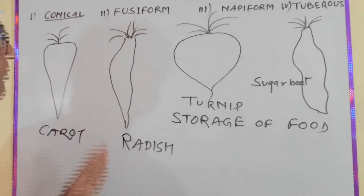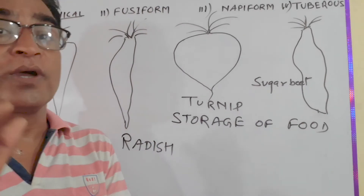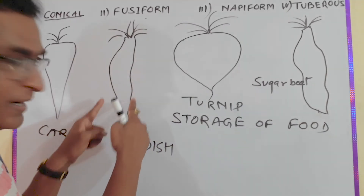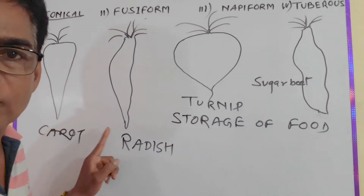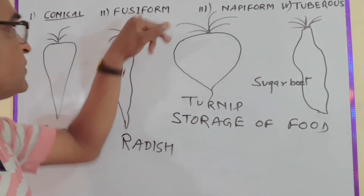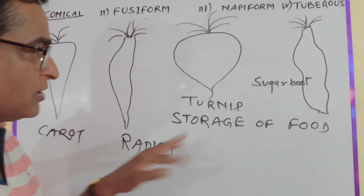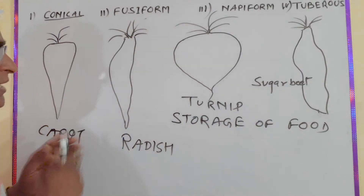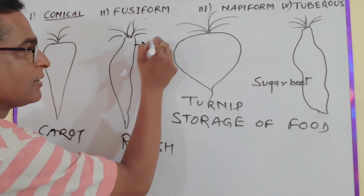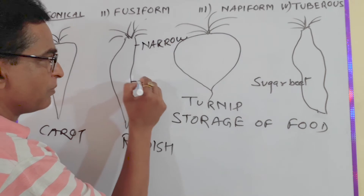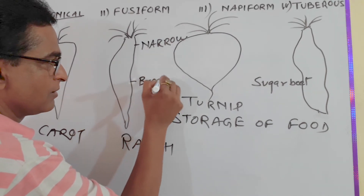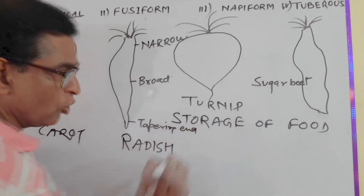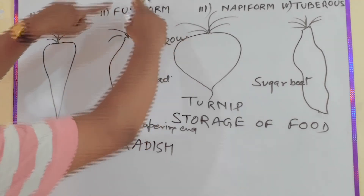When the root is in the form of fusiform, you can define it as follows: the upper portion is narrow, the middle is broader, and the lower end is once again narrow or tapering. This is the definition of the fusiform root modification on the basis of storage. So the fusiform root has a narrow upper part, a broad middle, and a tapering lower end.